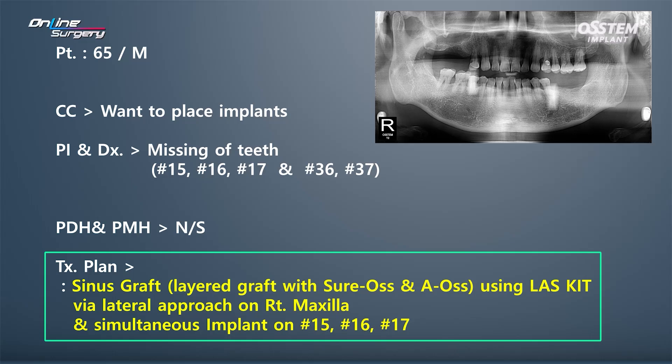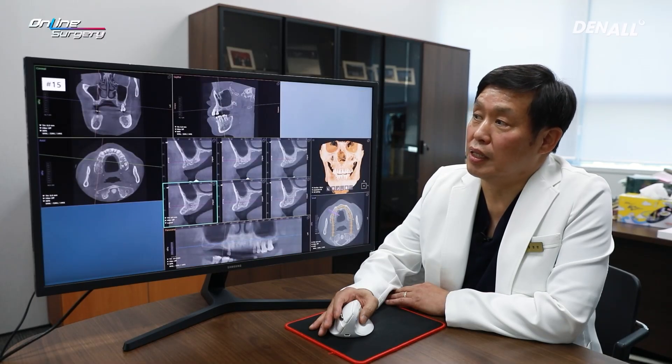As for the bone graft, I decided to use a layered bone graft approach. I would use Sureos, the allogenic bone, on the bottom, and use Leos, the bovine bone xenograft, on top. At the same time, I decided to place three implants at once.